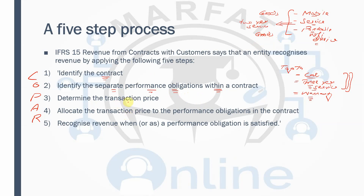The third step is determining the transaction price. When you are entering into a contract, the contract will have a transaction price — it may have a fixed consideration, a variable consideration, or non-cash considerations. The fourth step is allocating the transaction price to the performance obligations in the contract.